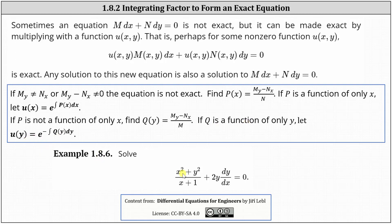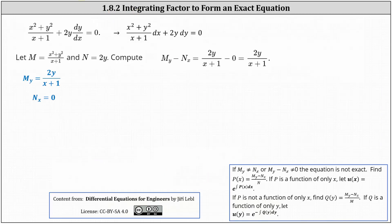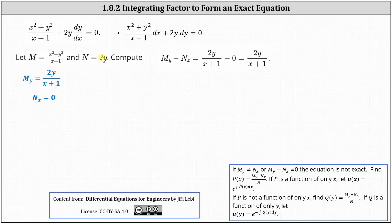Let's try solving the differential equation below. We write it in differential form by multiplying both sides by dx. In this form, M equals (x² + y²) / (x + 1) and N equals 2y. Now we determine the partial of M with respect to y and the partial of N with respect to x. Differentiating M with respect to y, treating x as a constant, gives 2y / (x + 1). Differentiating 2y with respect to x, treating y as a constant, gives zero.